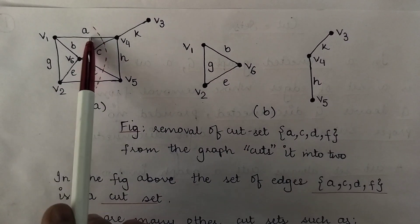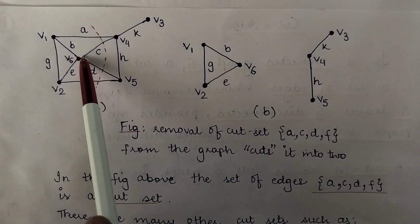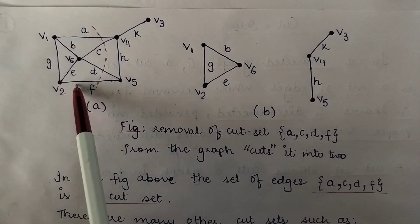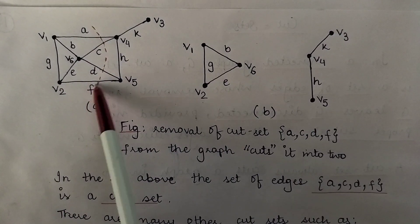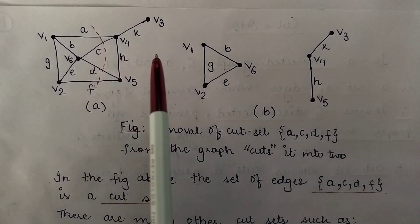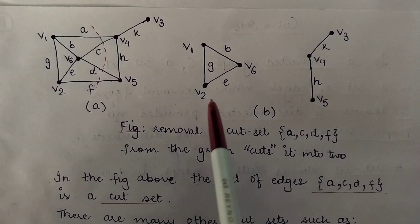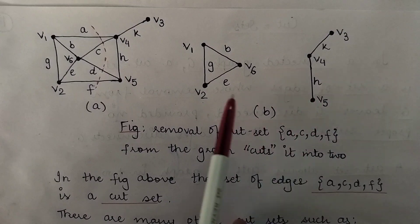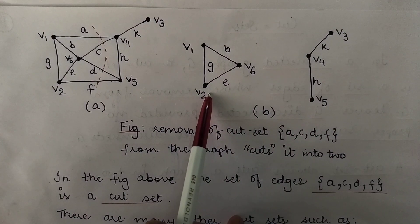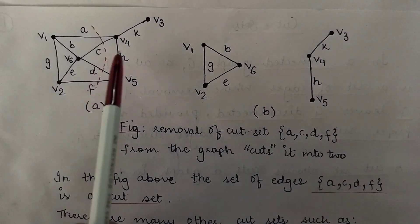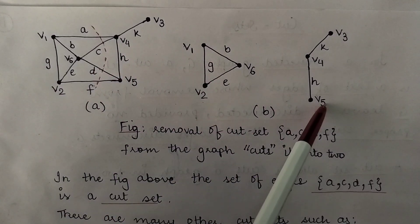So A is one edge, C is one edge, then D and then F. That means if you remove these four edges A, C, D, F from this connected graph, it would leave the graph disconnected and divide it into two separate components. This is how it divides them into two separate components — these are the components we are talking about.